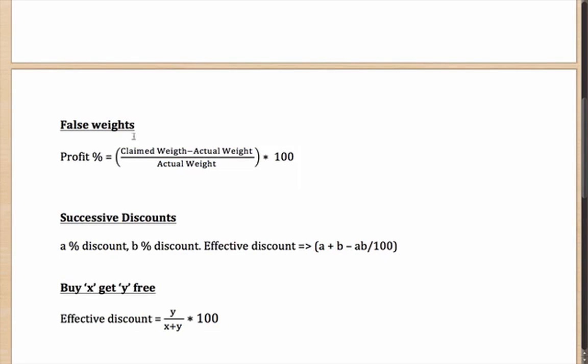In case of successive discounts, that is an a% discount then a b% discount, if you remember we discussed something very similar in the case of percentages. You can use either that formula, but there you will have to take care of the signs. Or you can use this very simple formula for successive discounts: a + b - (ab/100). Which means, let's say if you are given